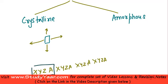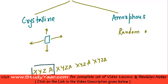In an amorphous solid, you do not have a regular arrangement. The atoms are arranged in a random order.